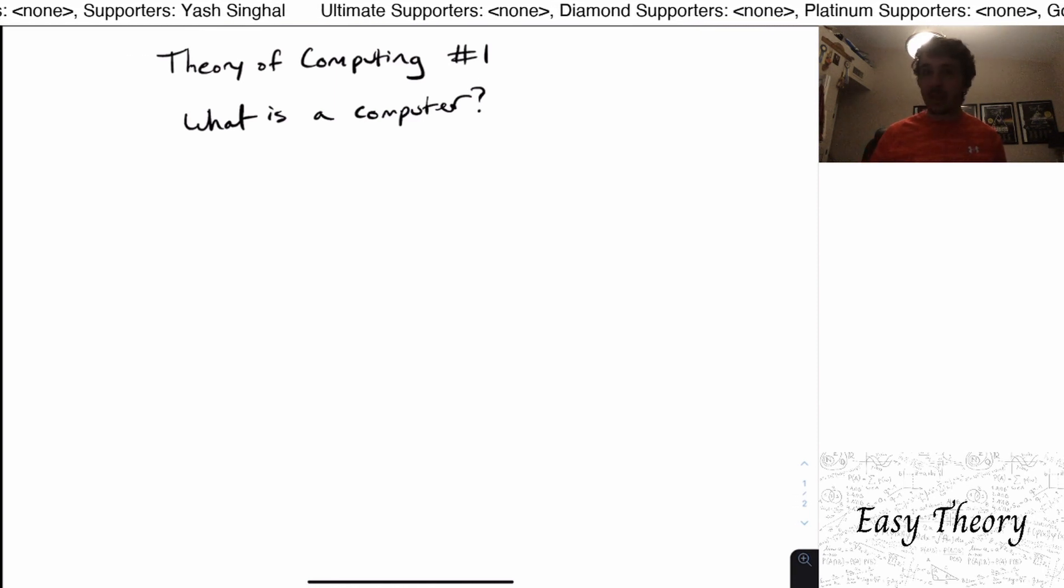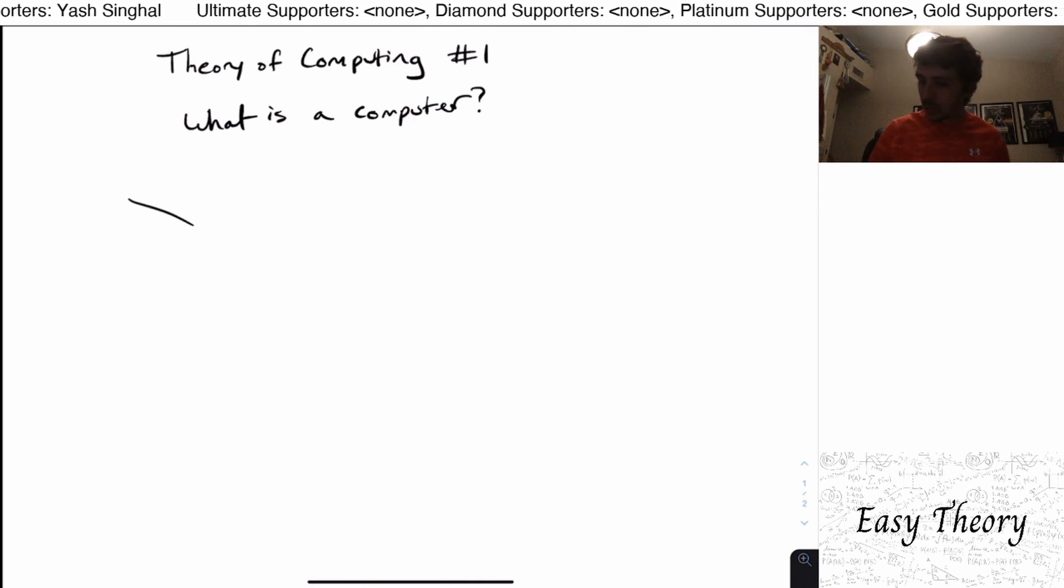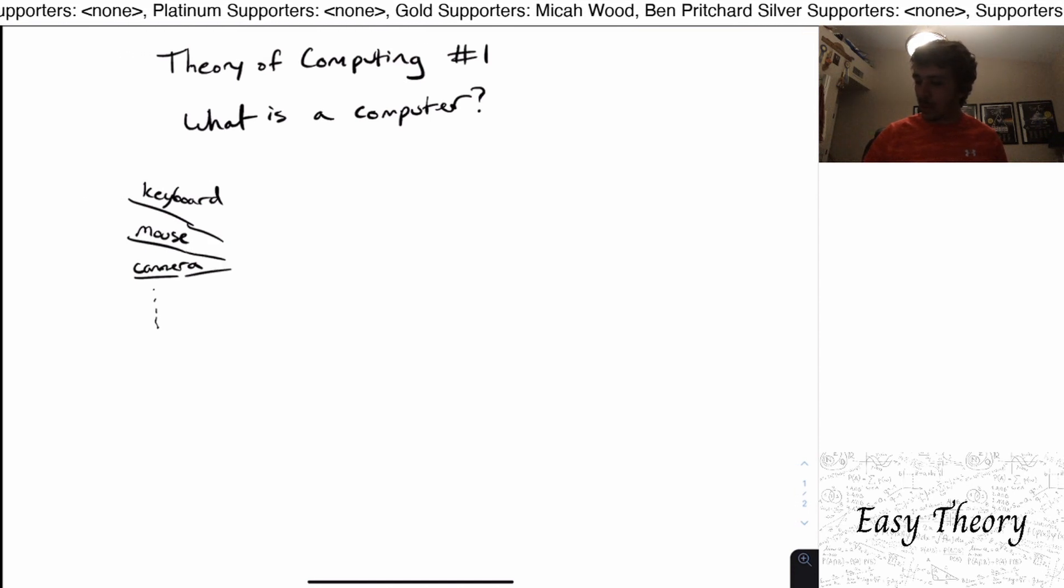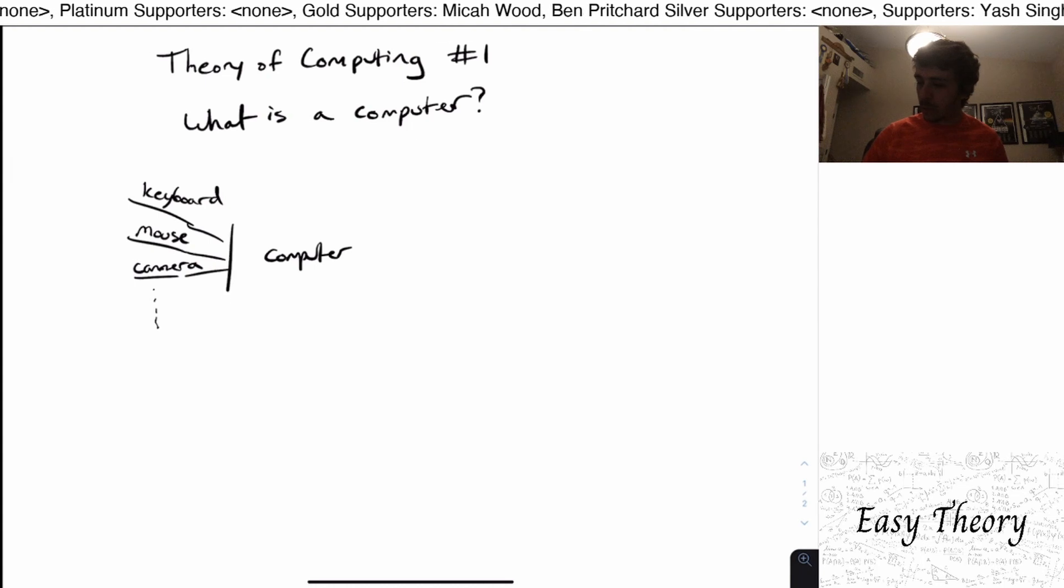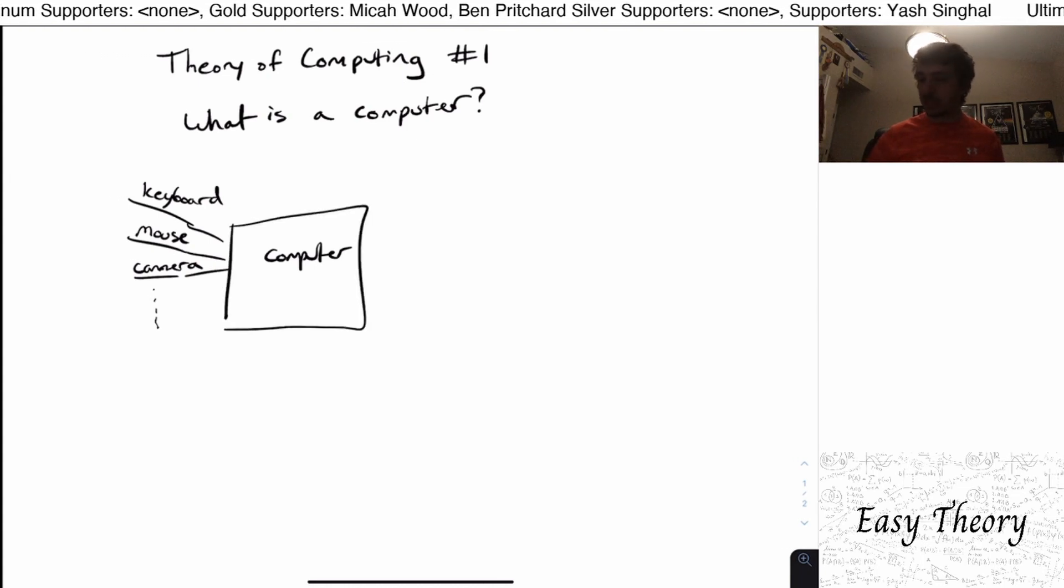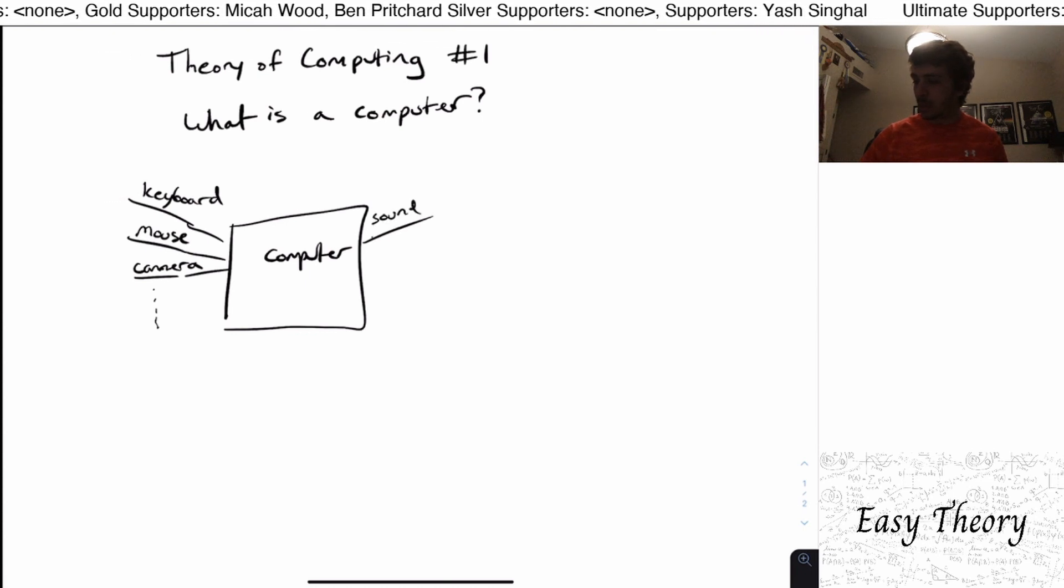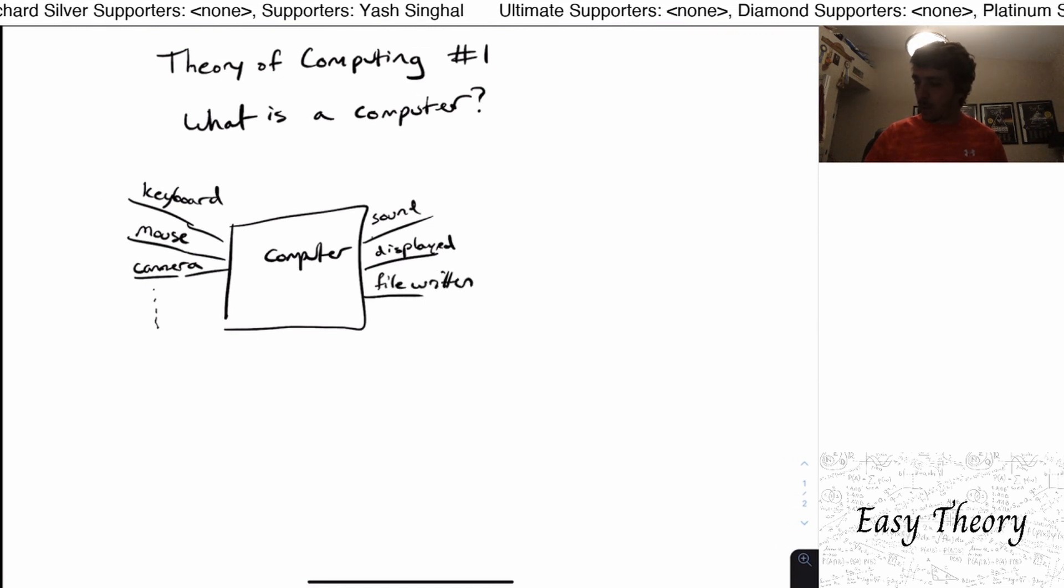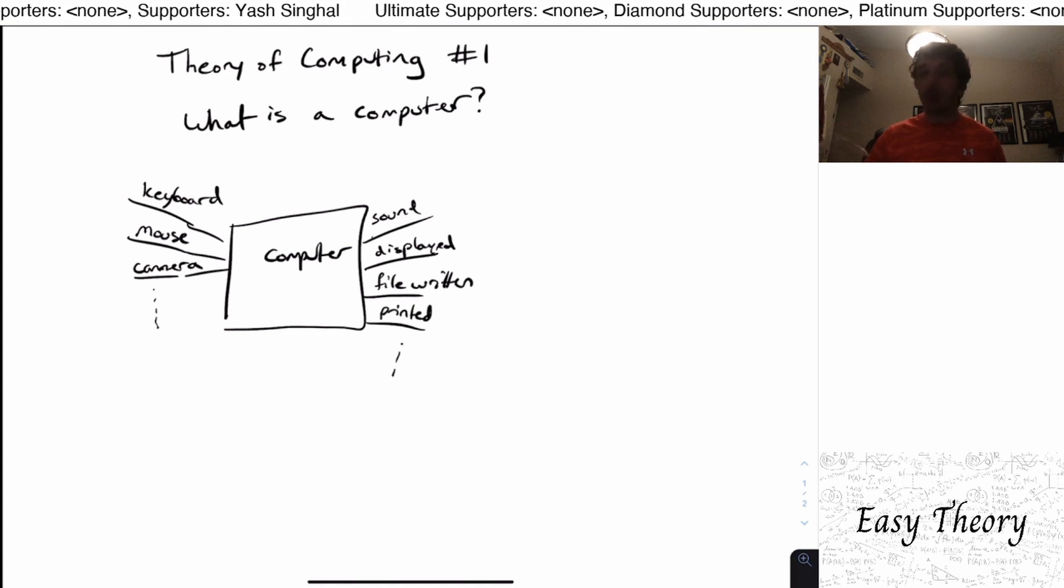So we can think of a bunch of things in a normal computer, such as we have some keyboard, and then maybe we have a mouse to a computer. We also may have cameras, and maybe some other devices and whatnot. And they're all fed into the computer, which we're going to represent by a big box like this. And some outputs of the computer might be some sound is played, or something is displayed on the computer, maybe the actual display is the actual output, or maybe a file is written, or maybe something's printed, or a whole bunch of different outputs may occur.